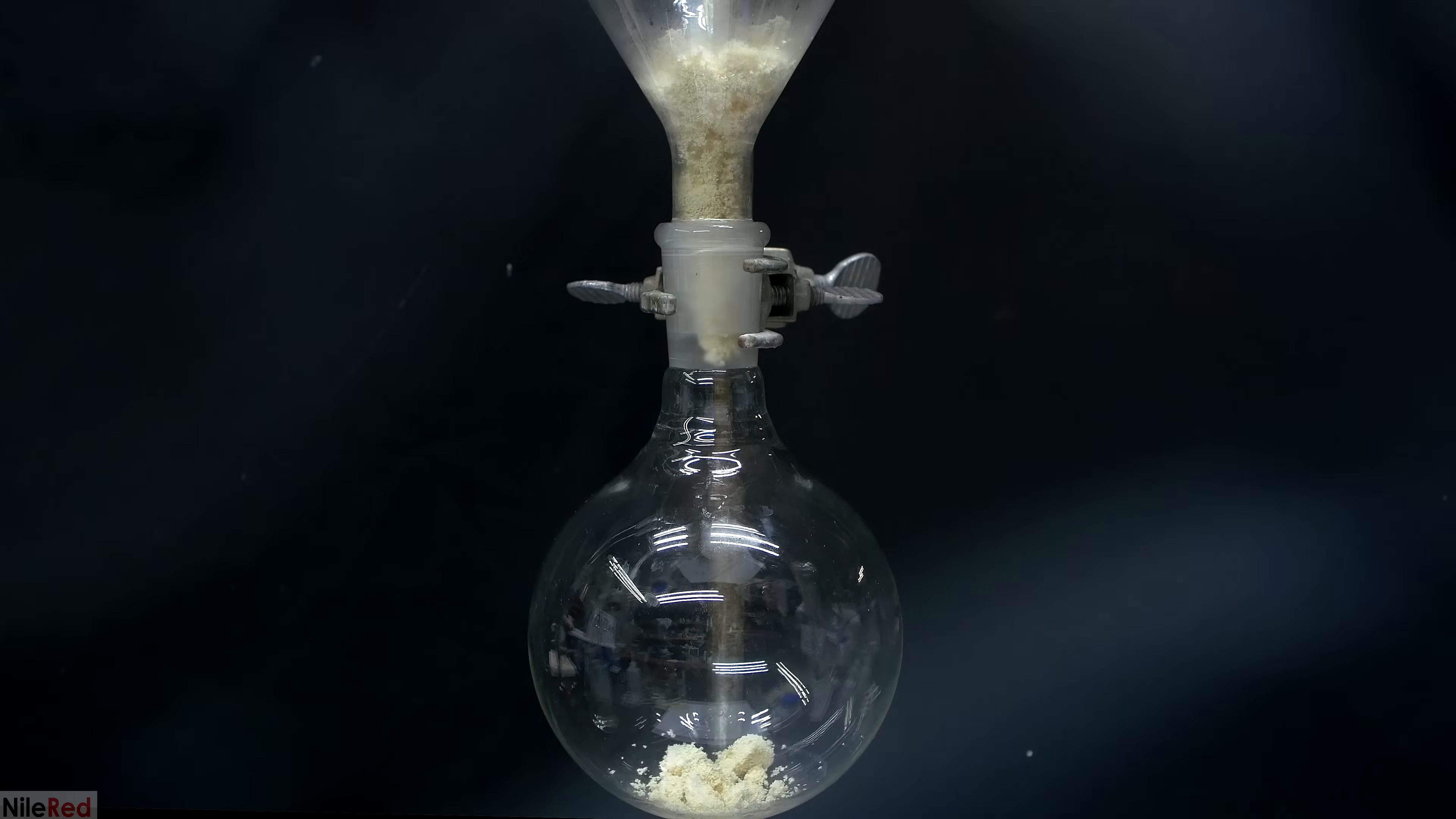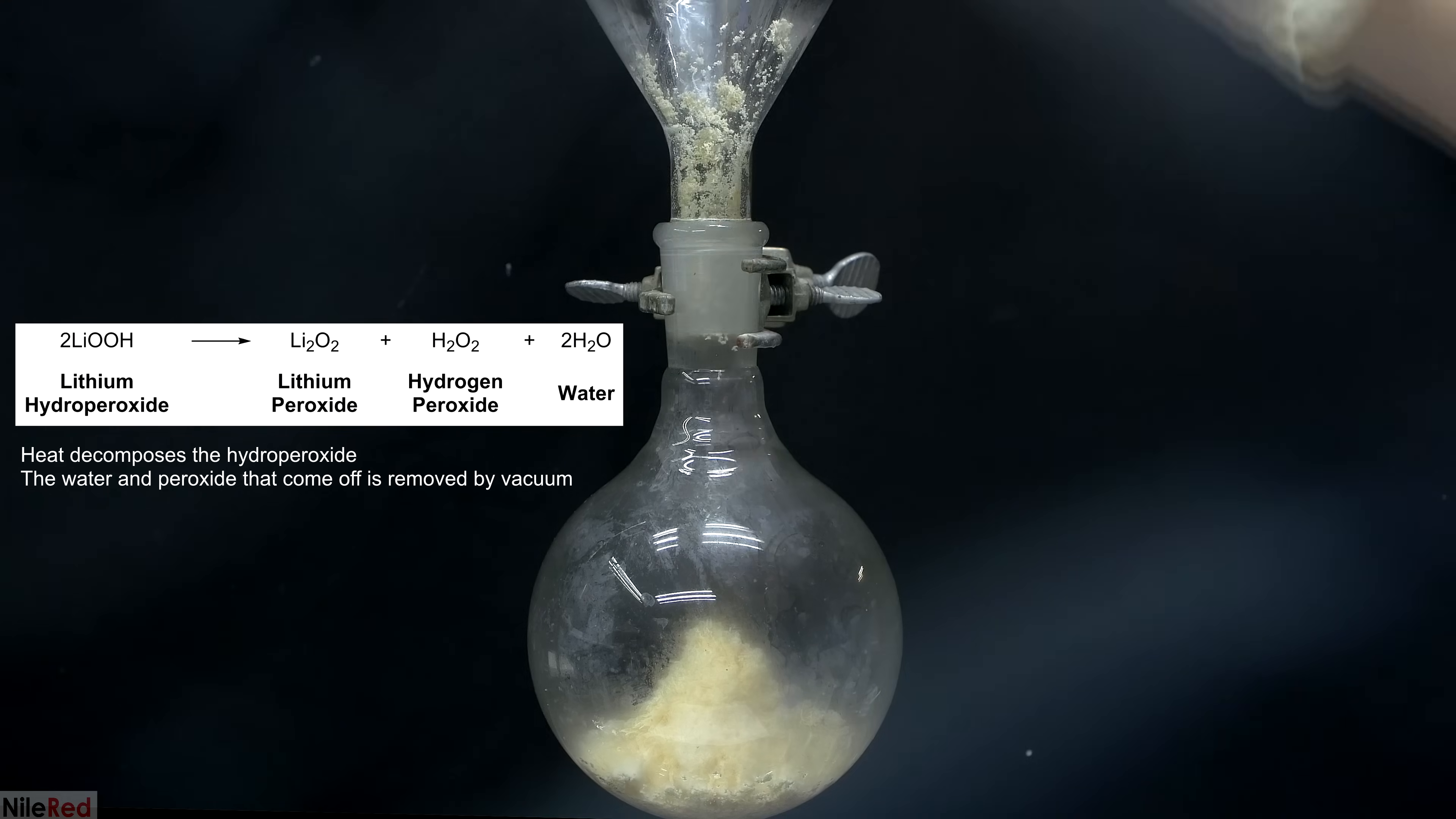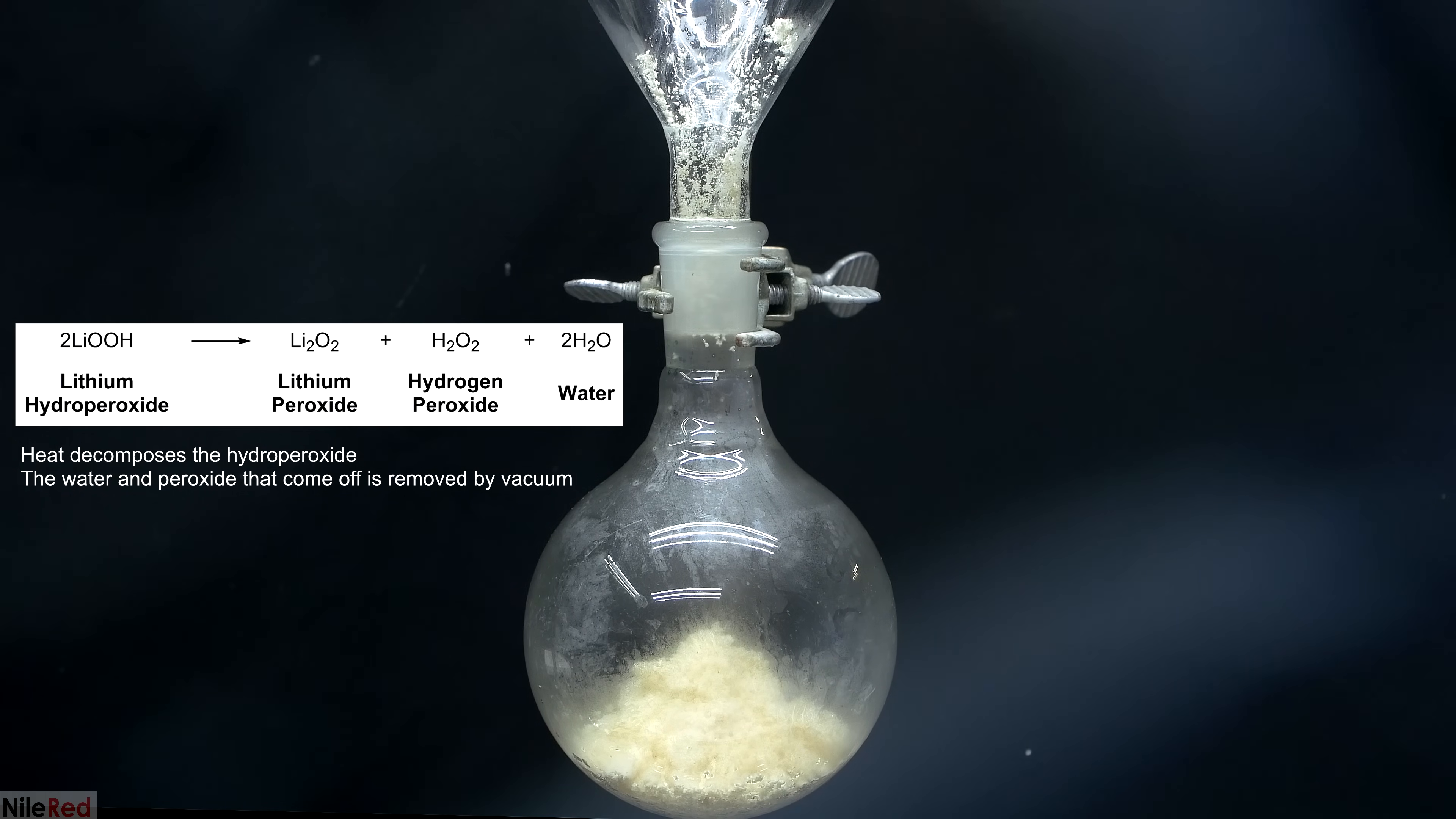The next thing that we need to do is convert the hydroperoxide of lithium into the actual peroxide that we want. This conversion is carried out by heating the lithium hydroperoxide while under a vacuum. So, what I'm doing here is transferring the hydroperoxide into a round bottom flask and then I'm going to pull a vacuum and heat it up over an oil bath.